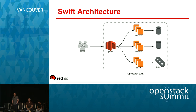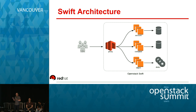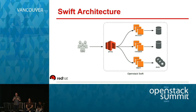If you are new to the Swift architecture, let me take you through it, because we're going to start talking about each one of these servers. The Swift architecture has four servers. The proxy server listens to requests coming in from the outside, and its job is to decide what other server to talk to. The account server is a metadata server whose job is to hold a collection of containers.